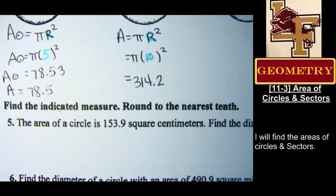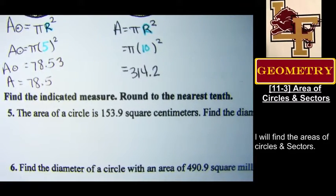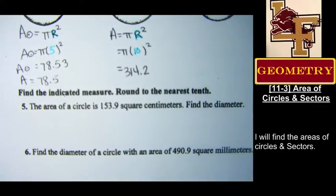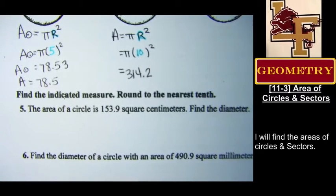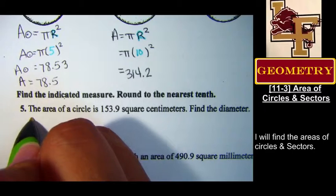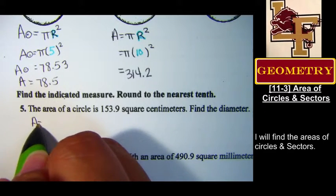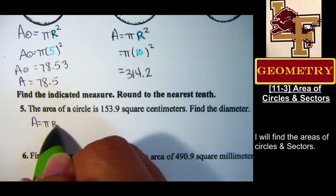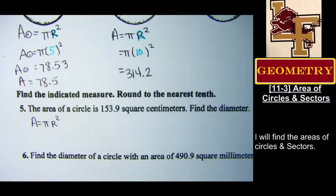When you're done, let's look at number five. Number five tells you, hey, here's the area. Find the diameter. Let's start with the formula. What's the formula for area of a circle? Pi r squared.